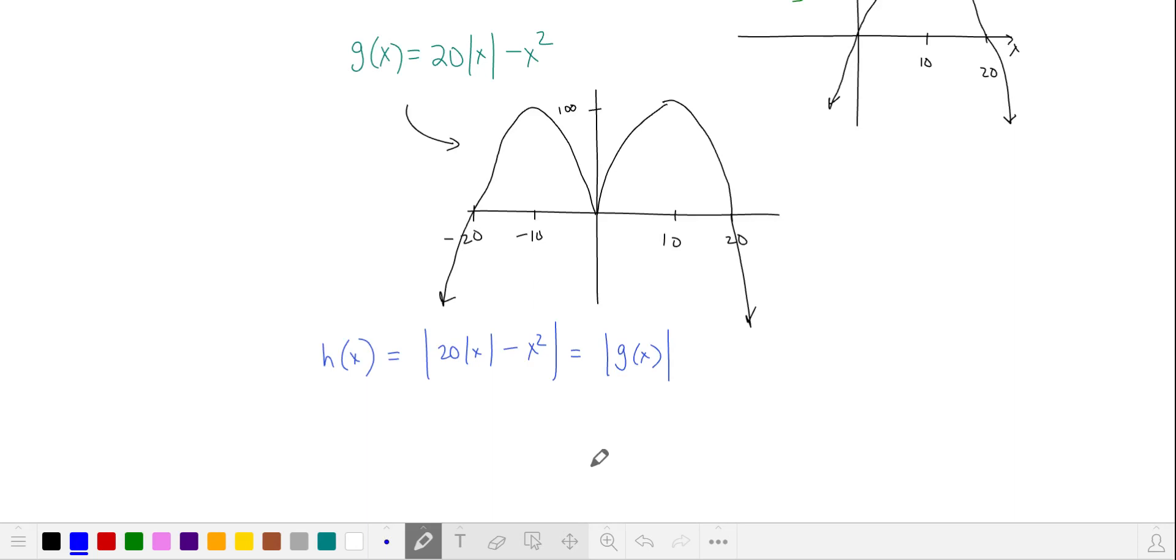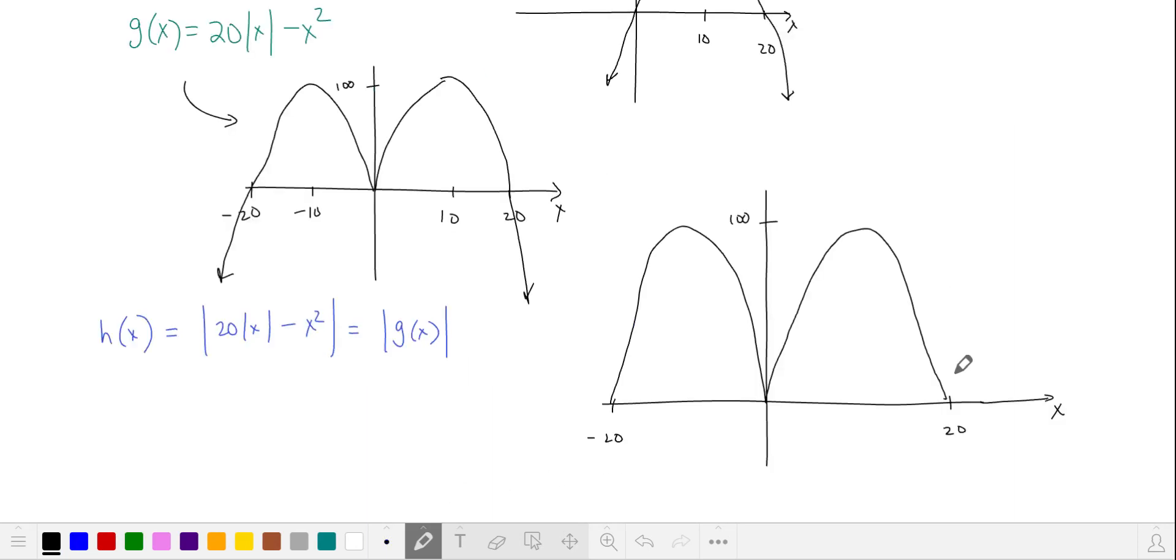Let's let h be the absolute value of the previous function. The absolute value means it's going to bounce up and off of the x-axis.